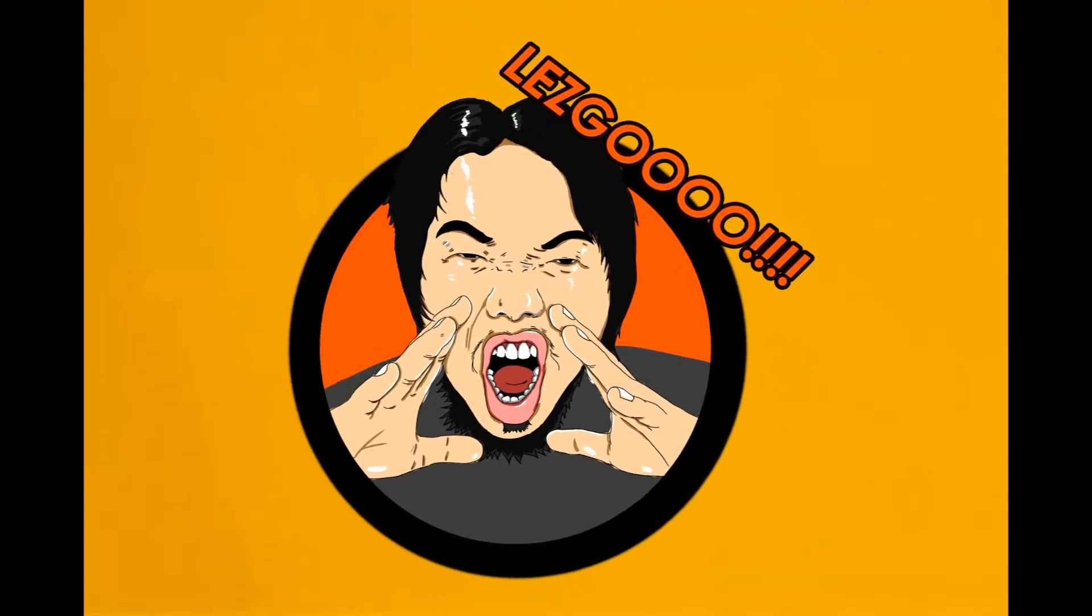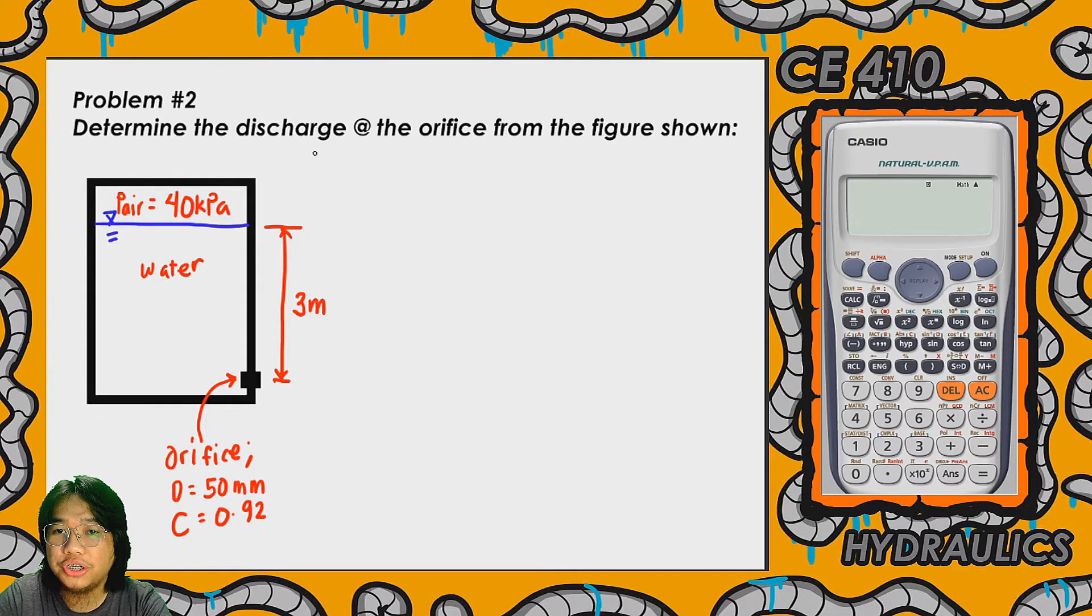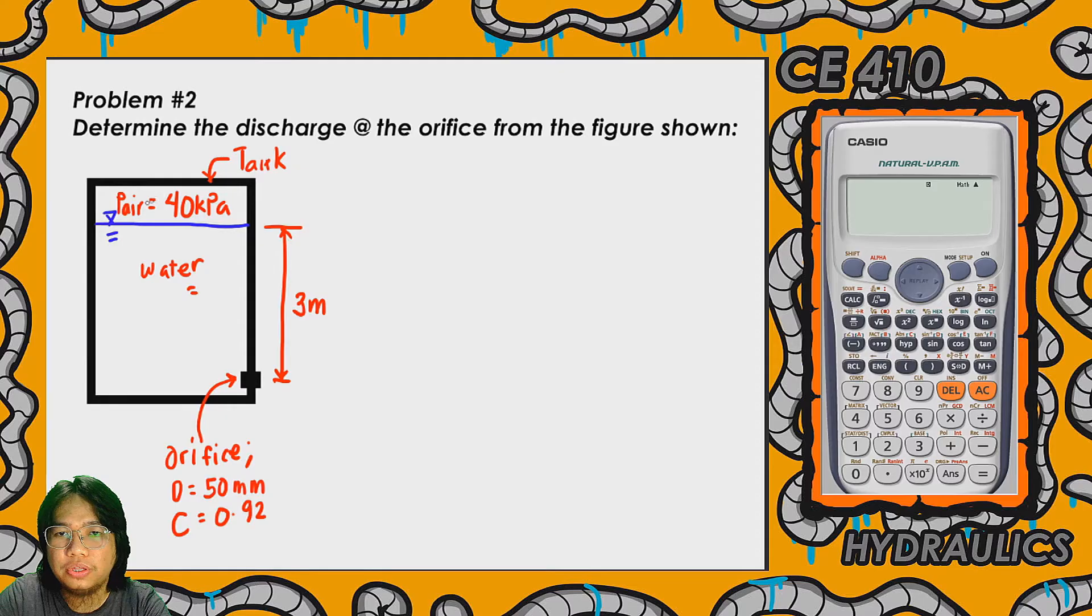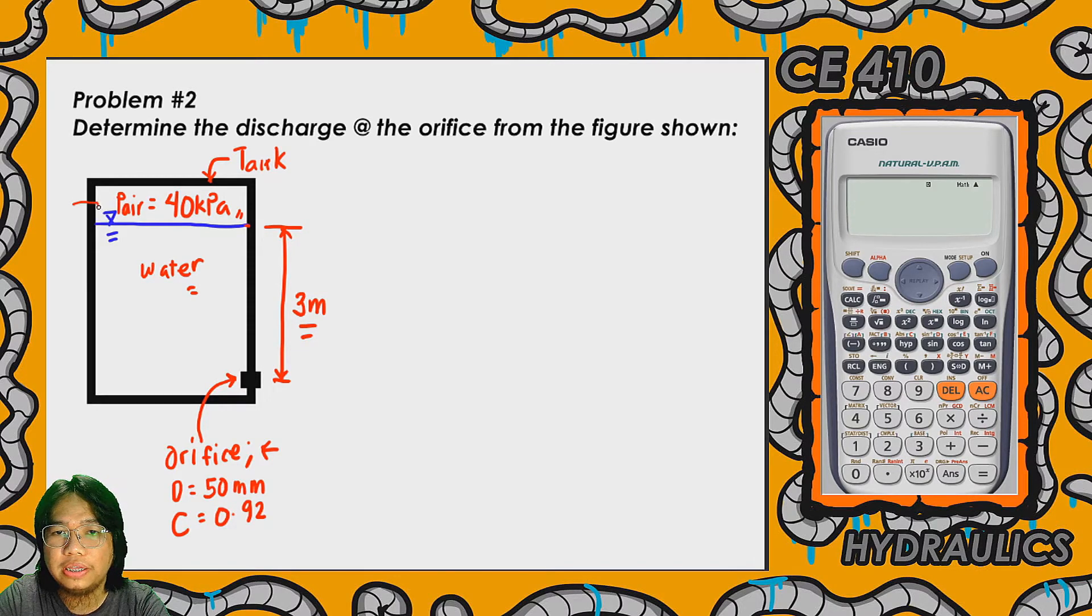So this is the problem, problem number two: determine the discharge at the orifice from the figure shown. As you can see in the figure, there is a reservoir, so this is a tank filled with water. The tank is under pressure, or there is an input air pressure or gauge pressure of 40 kilopascals. The head of the water from the orifice—the orifice is situated below the tank—up to the liquid surface is three meters.